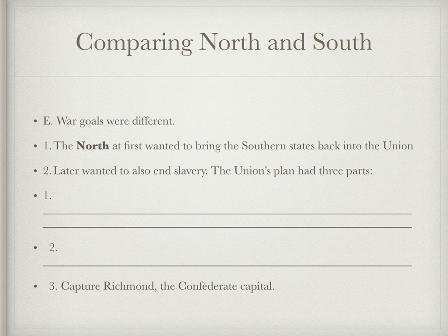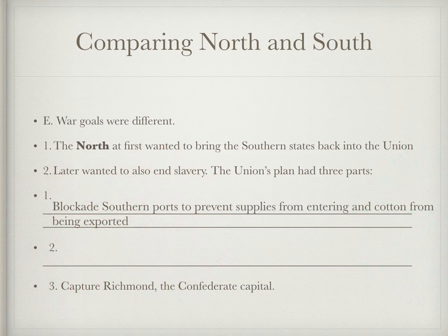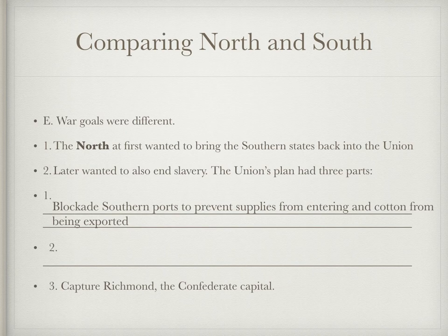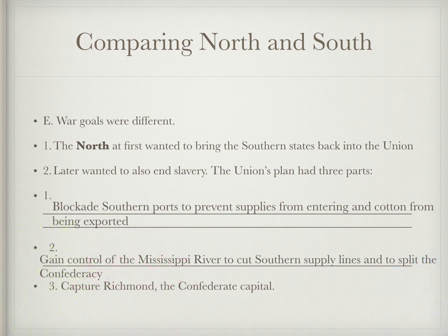The first part: blockade Southern ports to prevent supplies from entering and cotton from being exported — because cotton was king, and keeping the South from exporting it meant keeping them from making money. The second part: gain control of the Mississippi River to cut Southern supply lines and split the Confederacy. The third part: capture the Confederate capital of Richmond. That's the North's three-part plan to bring the Southern states back into the Union.